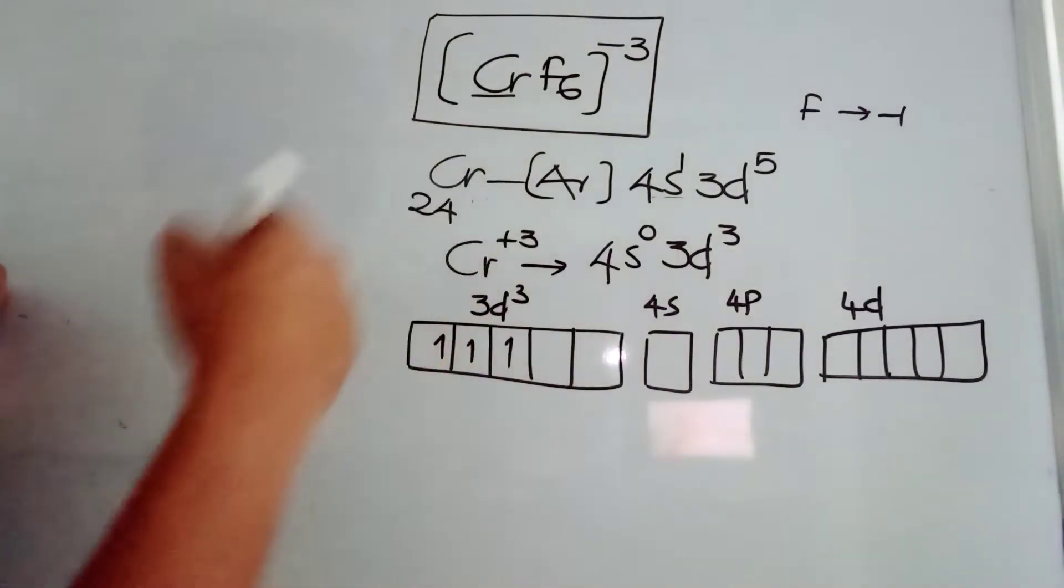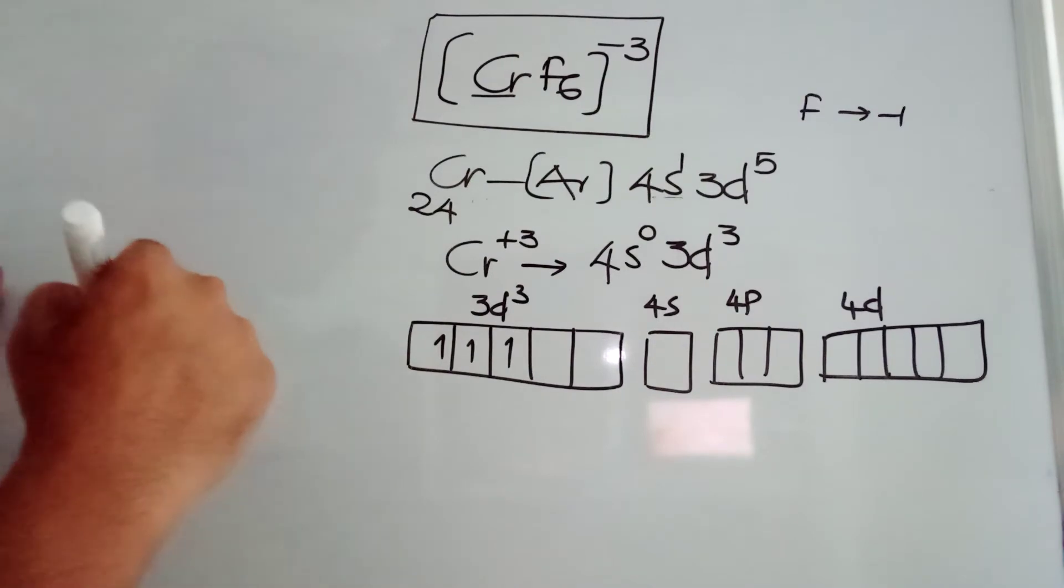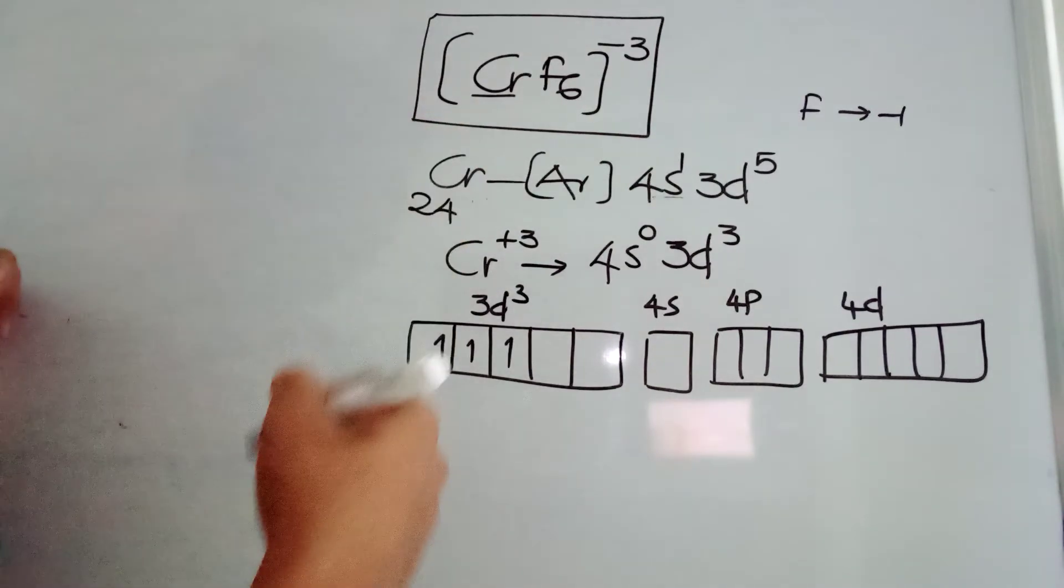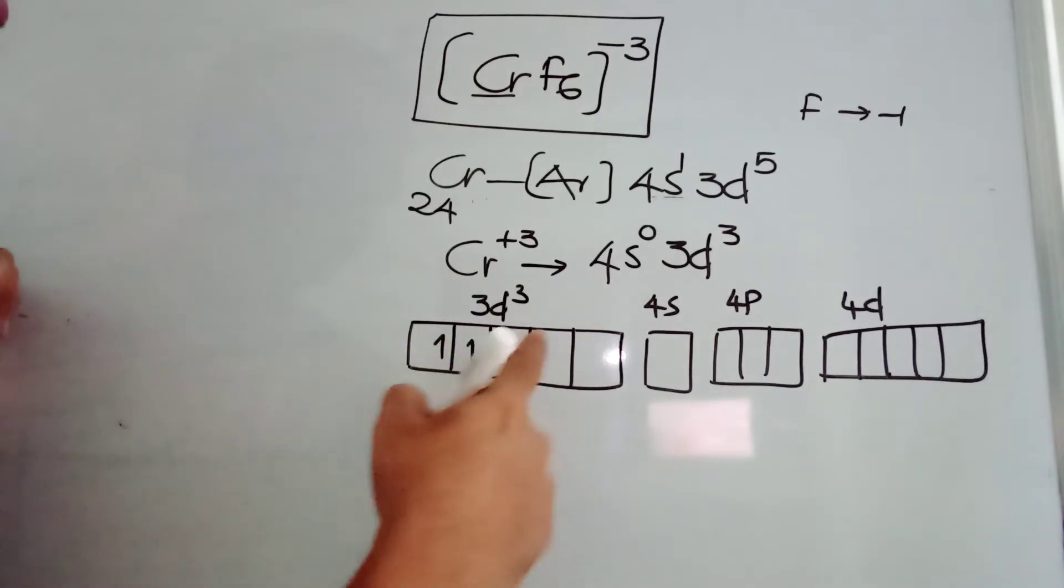Now, 6 fluorine, in the form of F-, 6 fluoride ions are to be occupied in the 6 chromium orbitals. You can see here, 2 orbitals are there. But these 2 orbitals are not taken by the fluoride ions, because fluoride ion is a weak-field ligand.